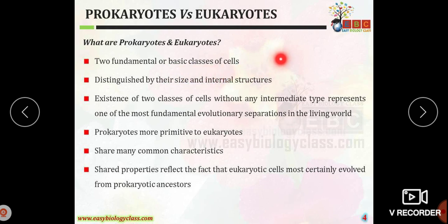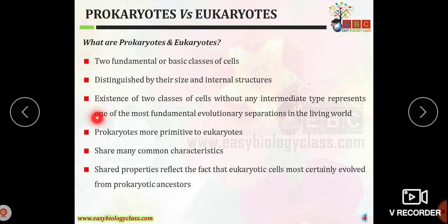Prokaryotes and eukaryotes are the two fundamental or basic classes of cells. This classification was given by scientist Roger Y. Stanier, who classified organisms into two types: prokaryotes and eukaryotes. This distinction is based on their size and internal structures, basically the presence or absence of a nucleus. Prokaryotic organisms are more primitive than eukaryotes.